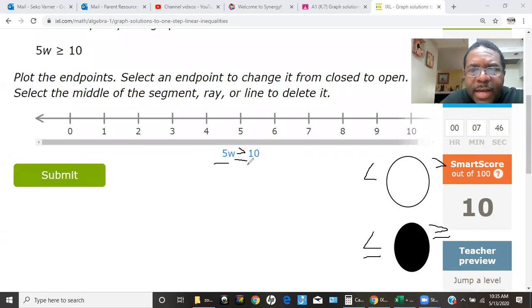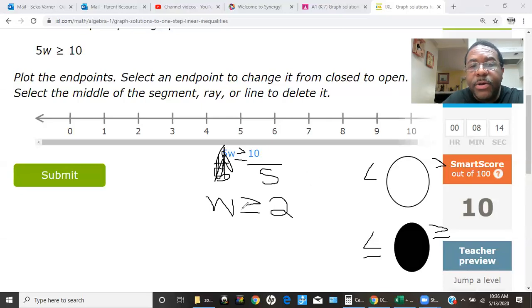We want to divide by 5 on both sides. 5 into 5 is 1, so they kind of cross each other out. That leaves us with w is greater than or equal to, and 5 goes into 10, or 10 divided by 5 is 2. So now we have w is greater than or equal to 2.